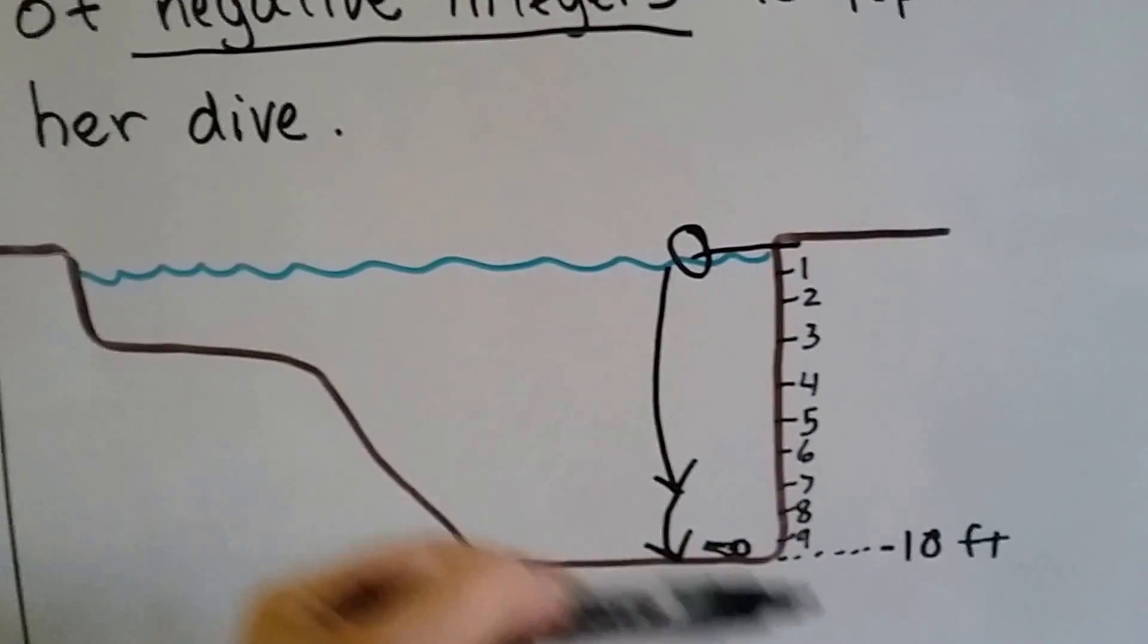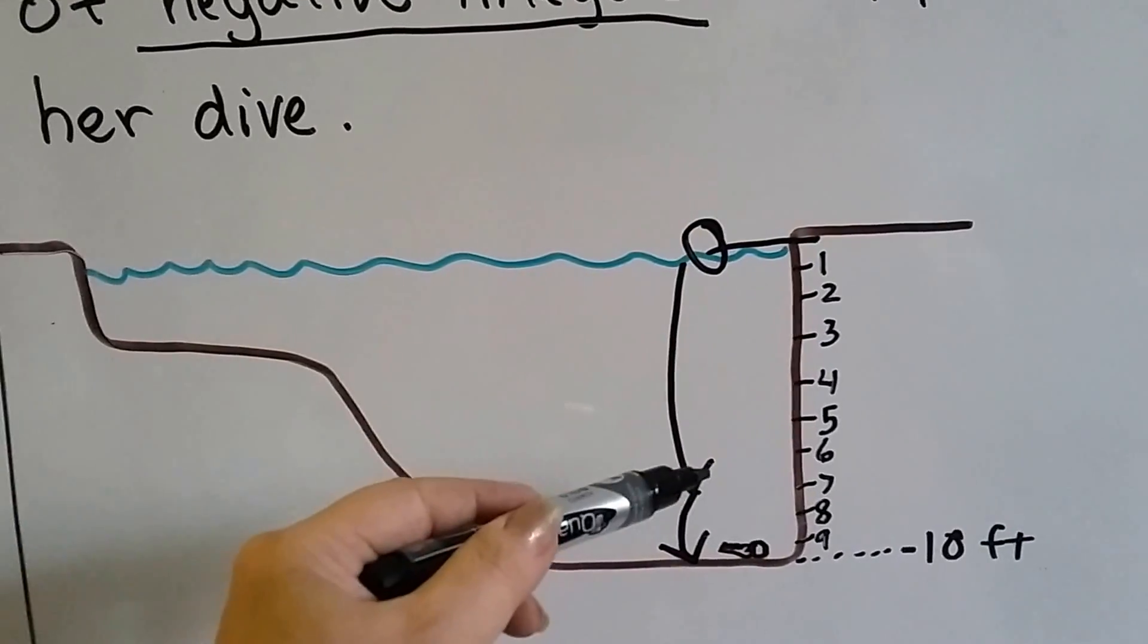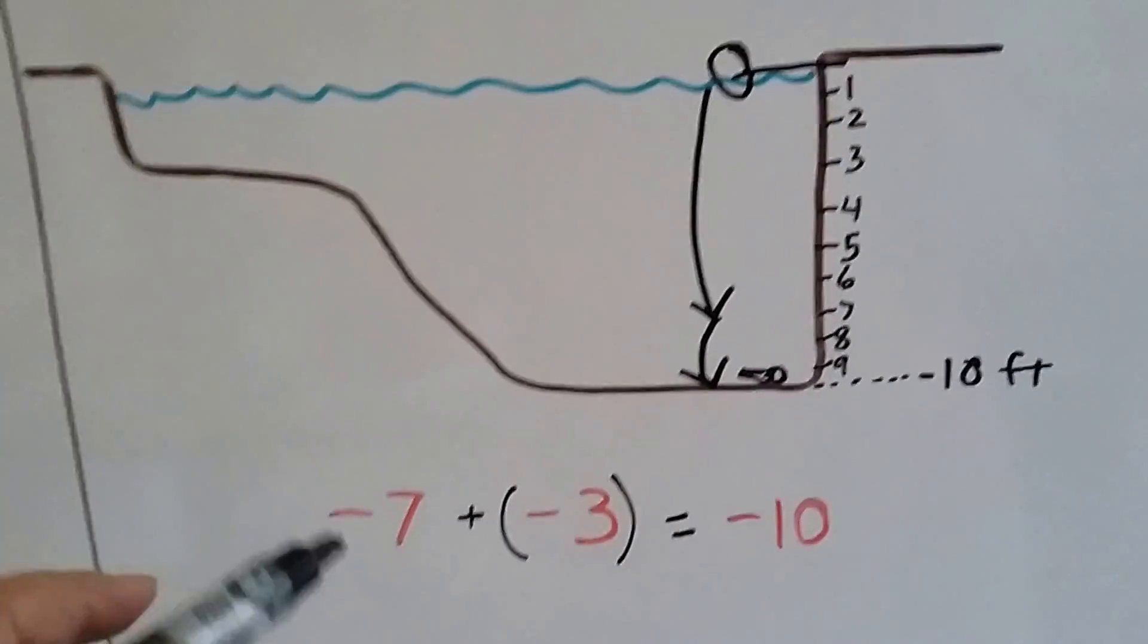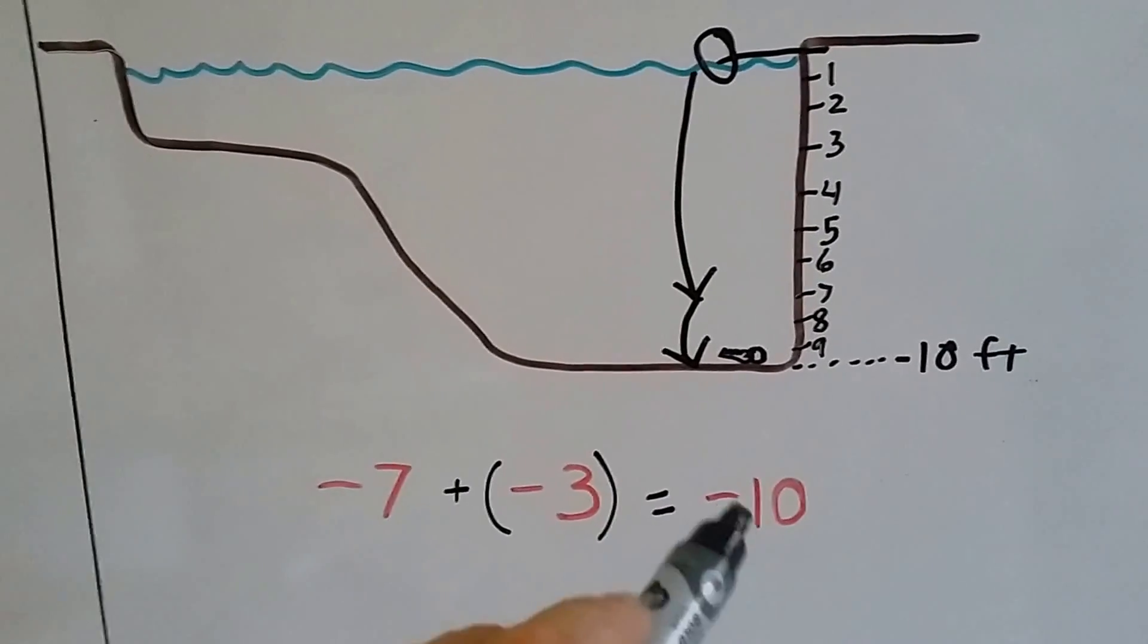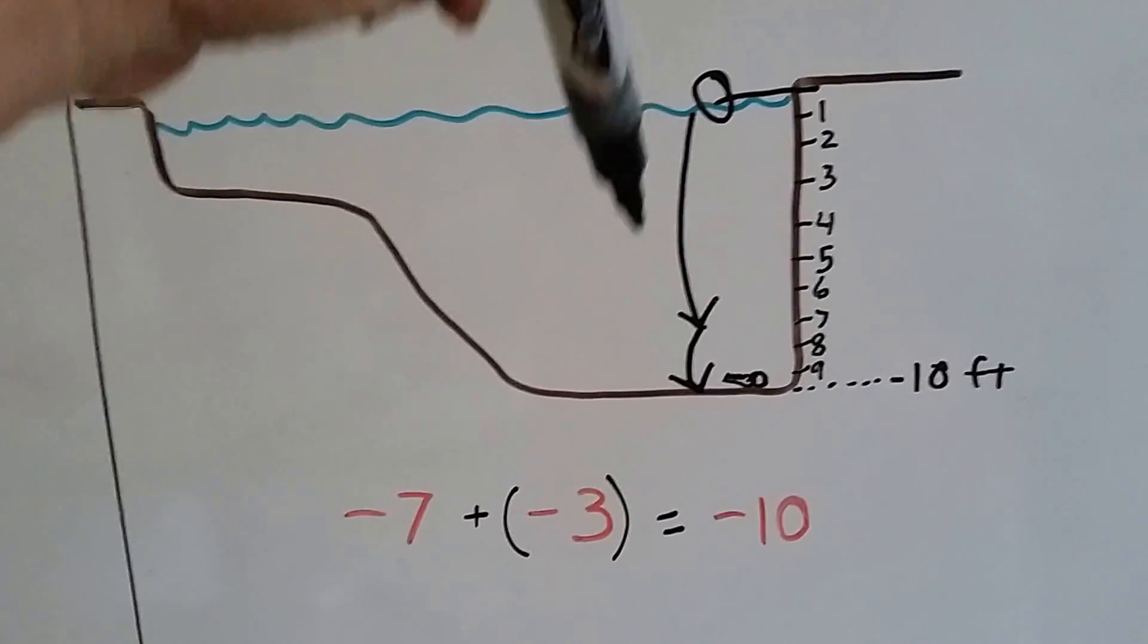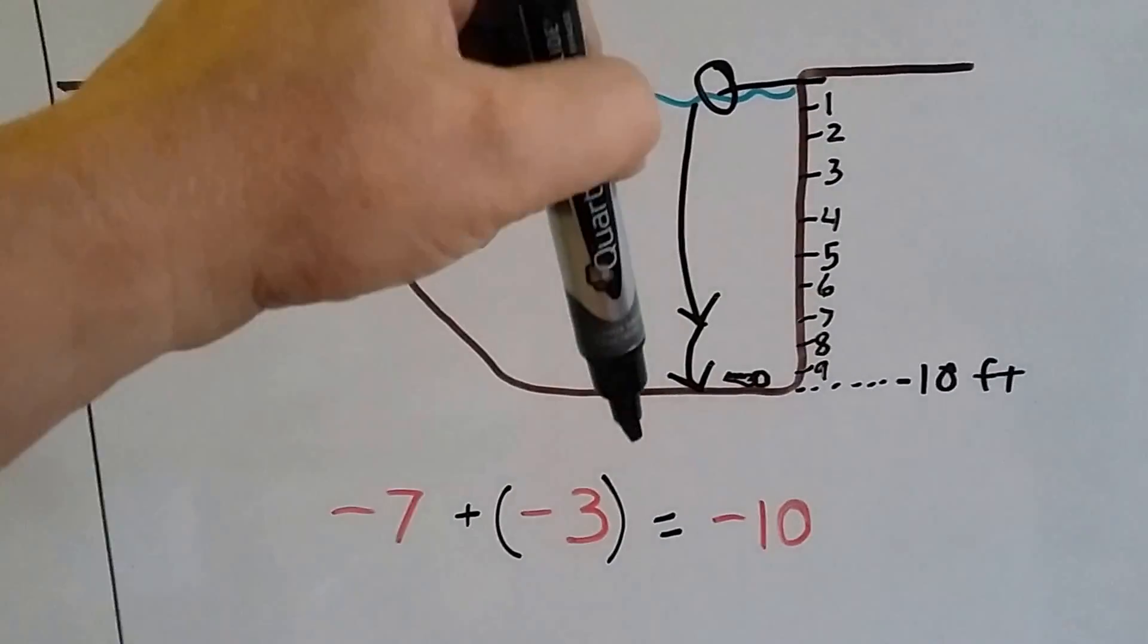So the keys were at negative ten. So if she dove down seven and then three, that gives us negative seven plus a negative three equals a negative ten. She's ten feet negative below the water level.